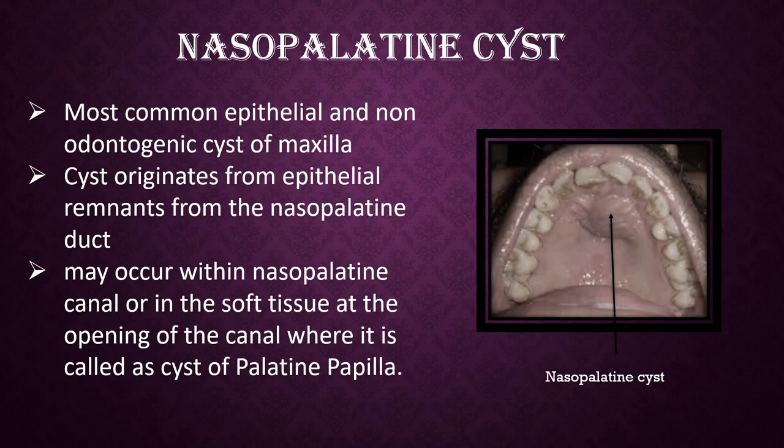Nasopalatine cyst is the most common epithelial and non-odontogenic cyst of the maxilla. The cyst originates from epithelial remnants from the nasopalatine duct. It may occur within the nasopalatine canal or in the soft tissue at the opening of the canal, where it is called as cyst of palatine papilla.